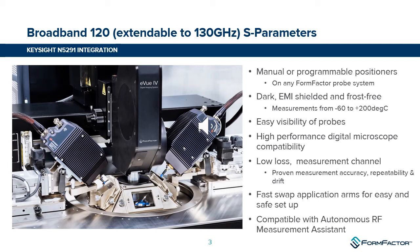We also have our fast swap application arms. If you want to swap from broadband coax measurements to 130 gigahertz and put on, for example, VDI extenders to do waveguide measurements at 220 or 330 gigahertz, it's very easy to swap between different applications. This setup is also compatible with our autonomous RF measurement system, which allows 24/7 testing over time and temperature, monitoring the calibration and recalibrating if it exceeds a certain error limit.